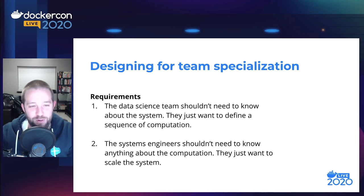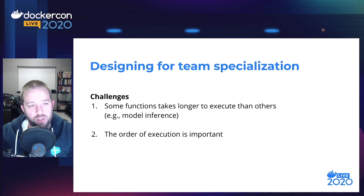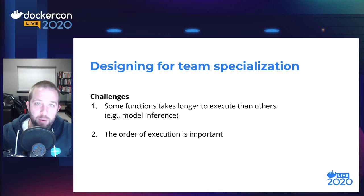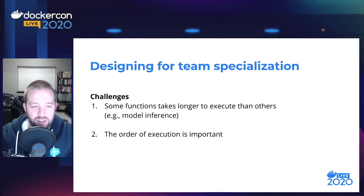This leads us into the first challenge: how can we design a distributed system for team specialization? We have a couple of requirements. The data science team doesn't really need to know about the system and isn't particularly interested in distributed systems — all they want is to define a sequence of computation, have it executed, and have the result sent to the customer. On the other hand, the systems engineers don't really need to know anything about the computation and aren't as interested in machine learning. All they want to do is build distributed systems.